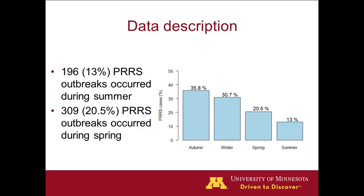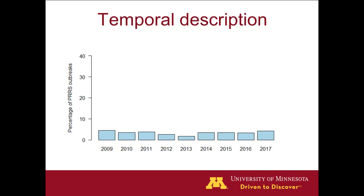Going deeper into these 200 summer outbreaks, we wanted to see whether there is any temporal trend in this data, so we plotted the incidence of summer outbreaks through time. When we do that, we can see there is not really any pattern — the trend looks pretty flat, and around 3.5% of sow farms have an outbreak each year.